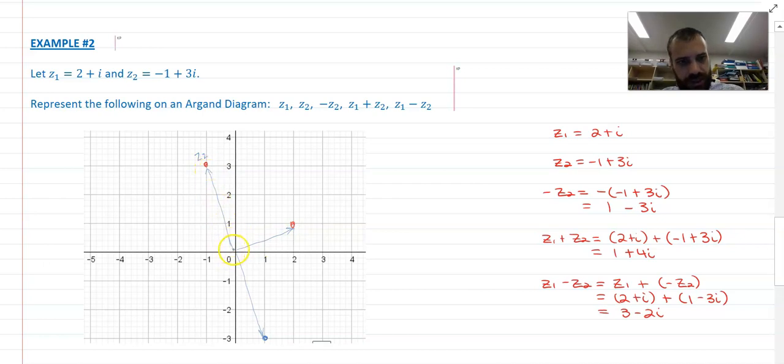I'm going to keep z1 where it is, and then I'm going to take z2, and I'm going to move it across so it looks like that. That's z1 plus z2. So you can see I've done it geometrically there.